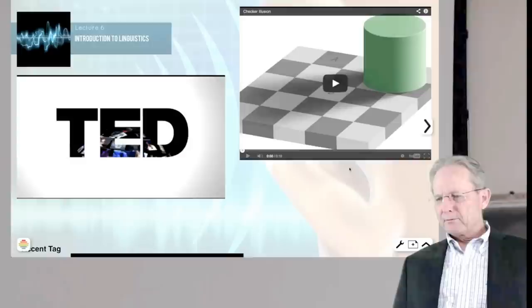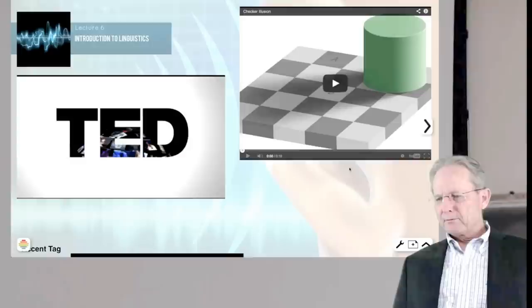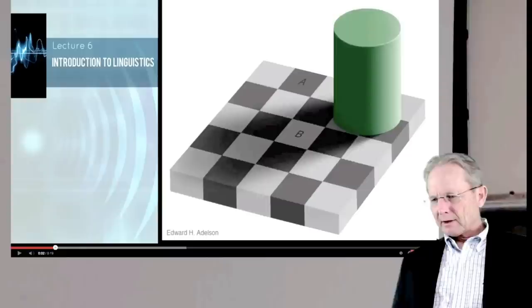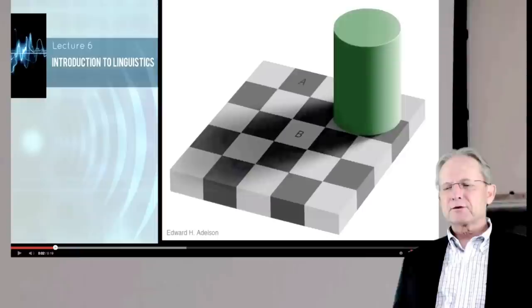So let's start with this famous illusion from an image by Edward Adelson that has to do with the colors on a checkerboard and how we perceive them in certain circumstances.